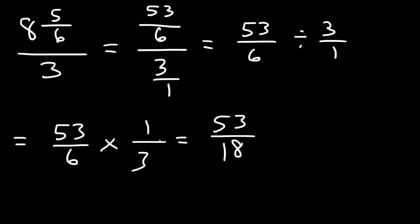And then if we do a long division, 18 goes into 53. Let's see, it's 18, 36, and then 36 plus 18 is 54, so it only goes into 53 two times.